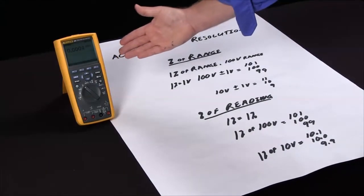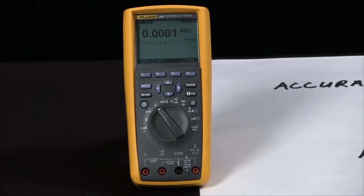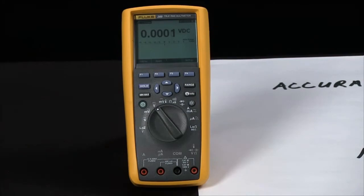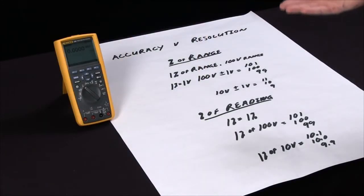And here we have our Fluke 289, which is actually one of the most accurate and highest resolution handheld multimeters you can get. It can actually outperform a lot of bench multimeters.